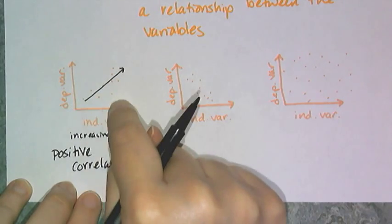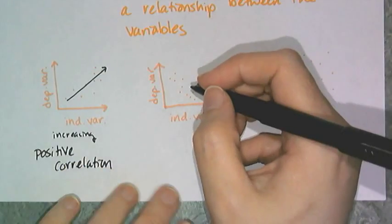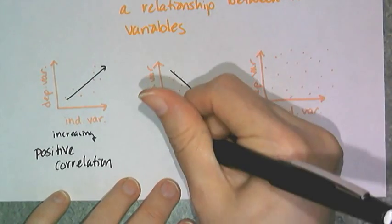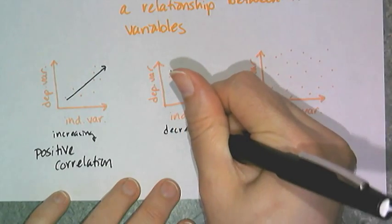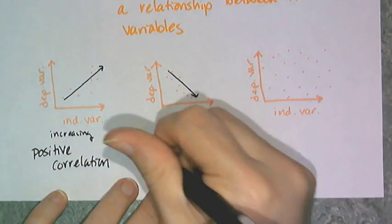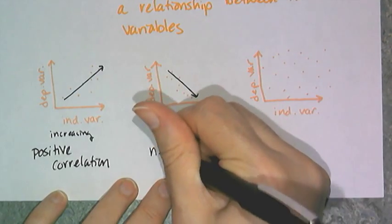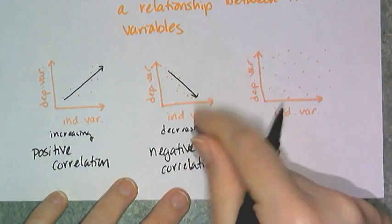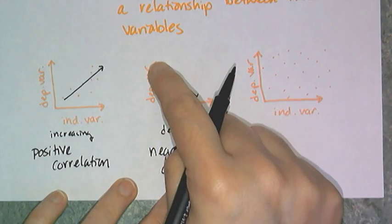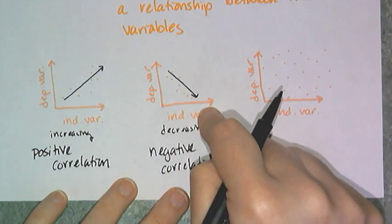So like the more you study, the better your grades are. Now this data has a downward trend, and we can of course say it's decreasing, but for scatter plots we say it has a negative correlation. That means as the independent variable increases, the dependent variable decreases, it goes down.